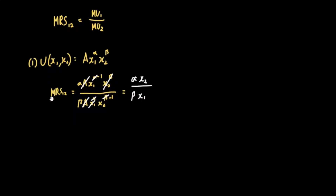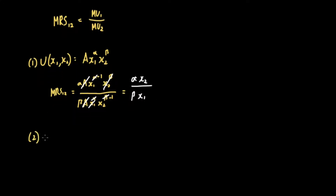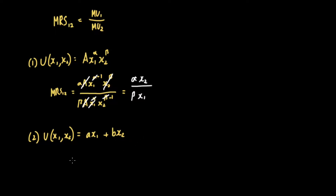In the case of perfect substitutes, our utility function u of x sub 1 and x sub 2 is just equal to A times x sub 1 plus B times x sub 2. When we get the marginal rate of substitution, the definition itself for perfect substitutes is that the marginal rate of substitution for the two goods should be a constant. So if the marginal rate of substitution is constant, then it would depend on the ratio of the two goods and not the total. Thus, in the case of perfect substitutes, the marginal rate of substitution is dependent on the ratio, making this also a homothetic utility function.